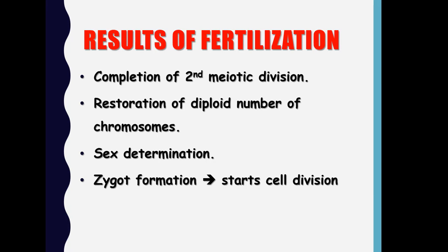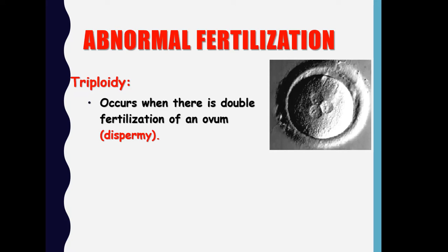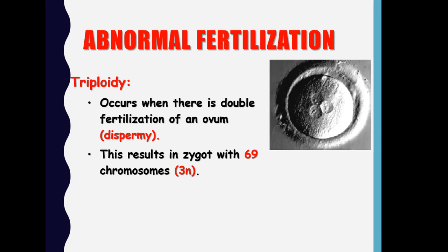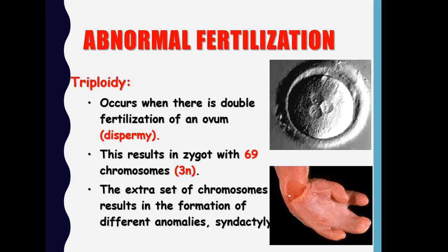Regarding abnormal fertilization: here you can see a zygote with three pronuclei. This occurs when there is double fertilization of an ovum by two sperms. This results in a zygote containing triple the amount of genetic material. The extra set of chromosomes results in formation of different anomalies — for example, syndactyly, which is the fusion of fingers — and other anomalies resulting from triploidy that are incompatible with life.